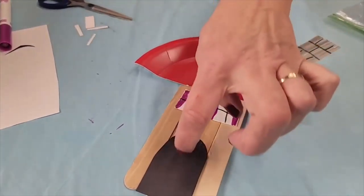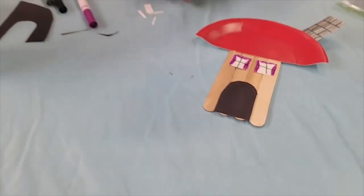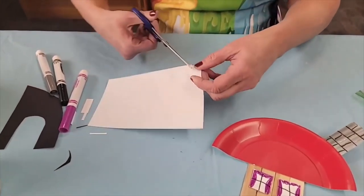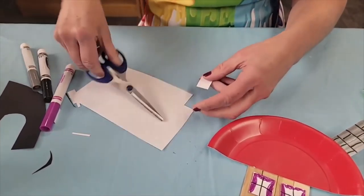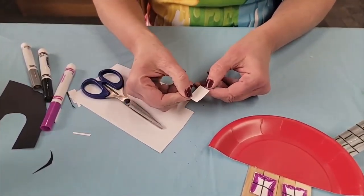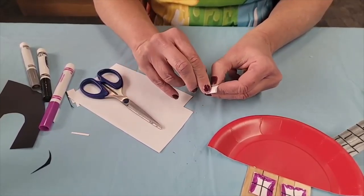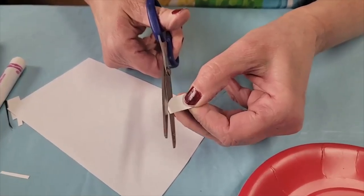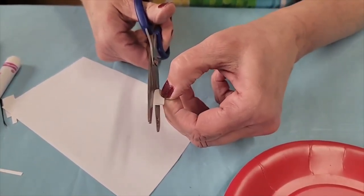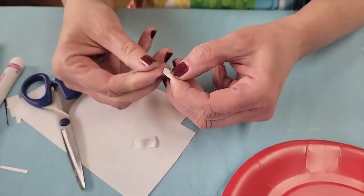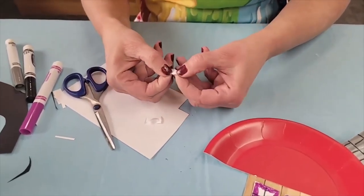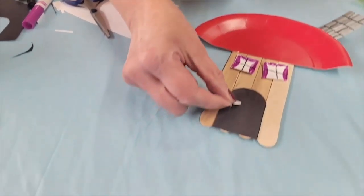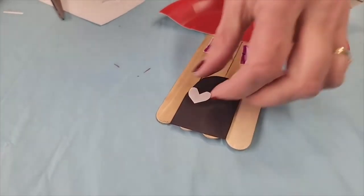Now in order to get into the house you need a doorknob and I made my doorknob to look like a little heart. So to make hearts I just took a little piece of paper, I'm going to fold it in half, and we're going to cut up and then we're going to circle around and back down. We'll open it up and we should have a heart. All right, so that can become the doorknob.